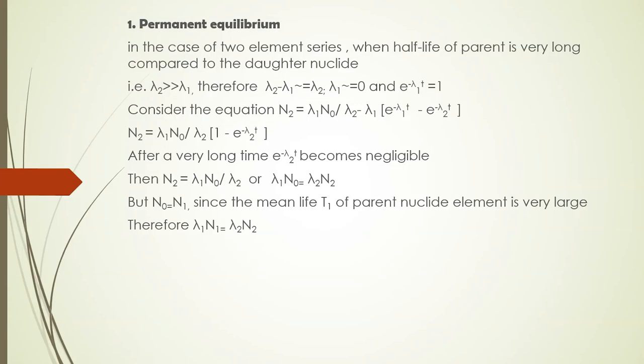In the case of permanent equilibrium in a two-element series, the half-life of the parent element is very long compared to the daughter nuclei, where λ₂ >> λ₁. Therefore, (λ₂ − λ₁) ≈ λ₂, λ₁ ≈ 0, and e^(−λ₁t) ≈ 1. Considering the successive disintegration equation: N₂ = λ₁N₀ / (λ₂ − λ₁) × [e^(−λ₁t) − e^(−λ₂t)].